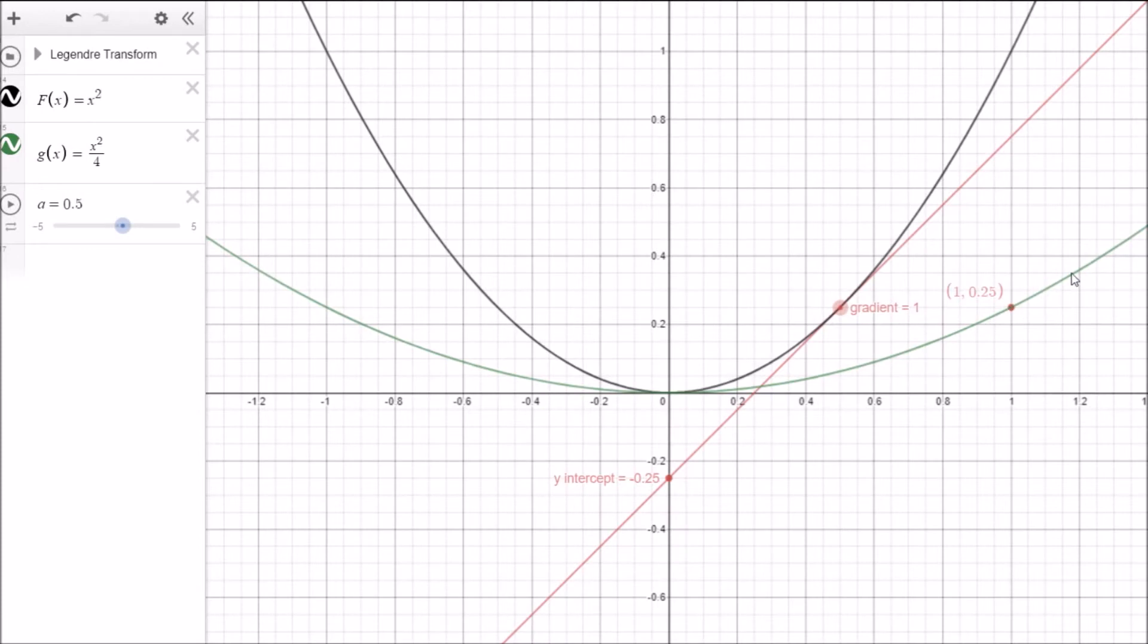So here's the key point in the connection between our function here, y equals x squared, and our Legendre transform in green. Now I've put the points here for this curve. And you can see here that at this point here, in the y equals x squared, we've got a gradient of 1. And we've also got the crossover point as minus 0.25.